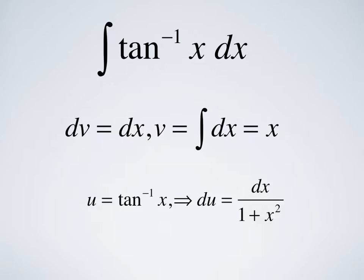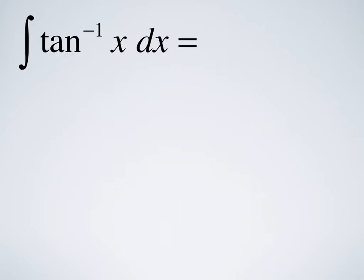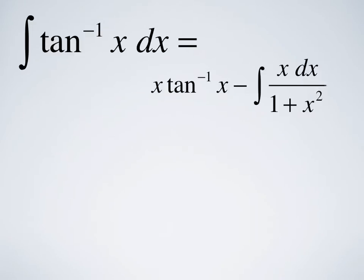Putting that together, we took u to be tangent inverse of x, du is dx over 1 plus x squared, and v is x. So we get the integral of tangent inverse of x dx equals x tangent inverse of x minus the integral of x dx over 1 plus x squared.